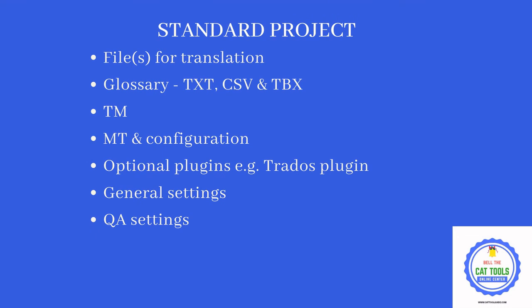In a standard project, you will have files for translation, optionally a glossary, and certainly a TM to save your translations — otherwise there is no meaning in using a CAT tool. Optionally you can configure a paid machine translation (MT) engine. You can additionally use plugins such as the Strados plugin from the Okapi framework. There are also general settings for the OmegaT software, including a QA function.